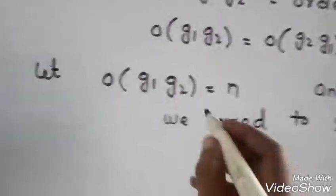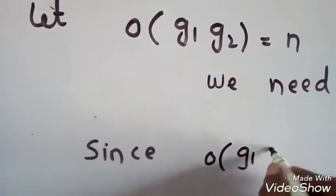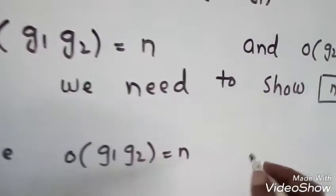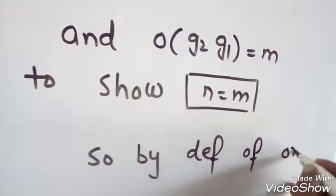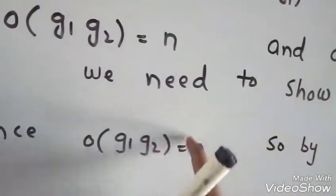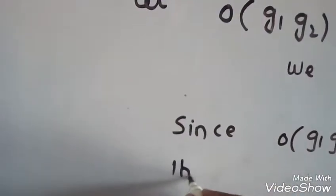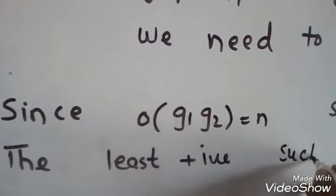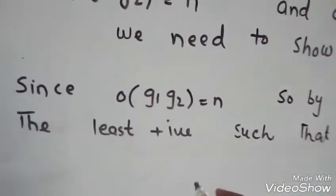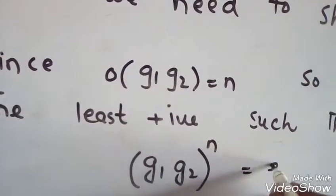Let order of G1·G2 be N. So by definition of order, N will be the least positive integer such that (G1·G2)^N is equal to identity.